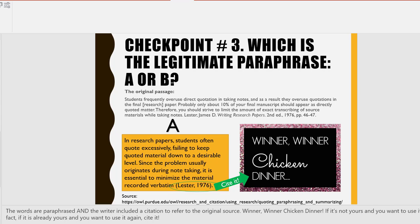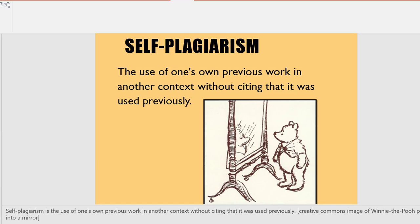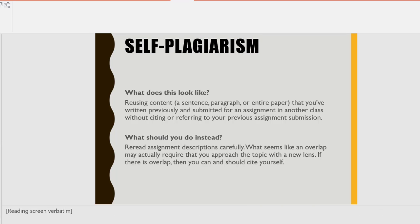If it's not yours and you want to use it, cite it. In fact, if it's yours already and you want to use it again, cite it. Self-plagiarism is the use of one's own work in another context without citing that it was used previously. Self-plagiarism — what does it look like? Reusing content, either a sentence, paragraph, or entire paper that you've written previously and submitted for an assignment in another class without citing or referring to your previous assignment submission.